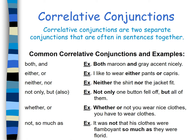Correlative conjunctions are two separate conjunctions that often appear in sentences together. Examples include: both...and, either...or, neither...nor, not only...but also, whether...or, not so much...as. Examples: Both maroon and grey accent nicely. I like to wear either pants or capris. Neither the shirt nor the jacket fit. Not only one button fell off, but all of them. Whether or not you wear nice clothes, you have to wear clothes. It was not that his clothes were flamboyant so much as they were florid.